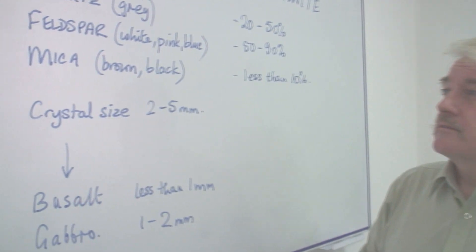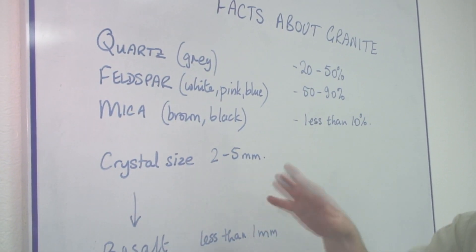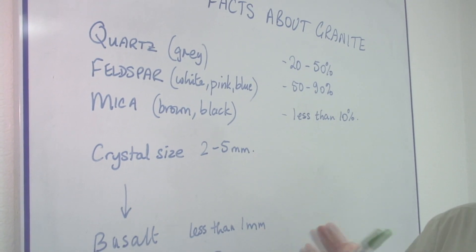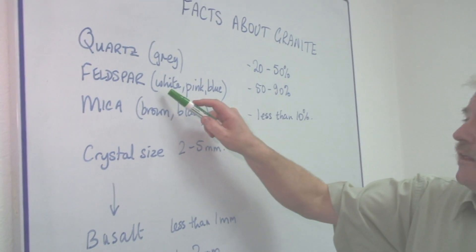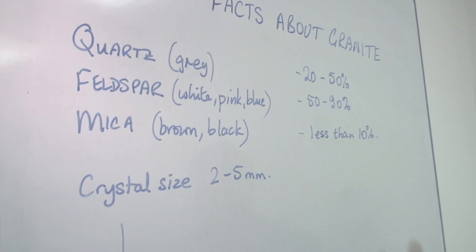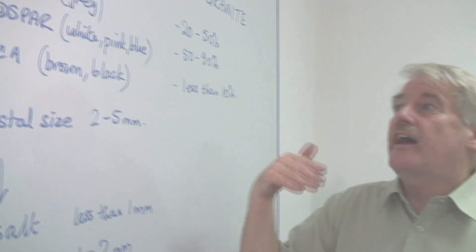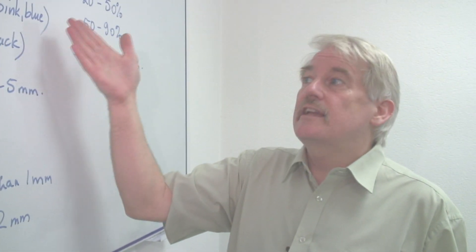Feldspar is of two types, which is alkaline feldspar and non-alkaline. The alkaline can be white or pink or blue. So the feldspar tend to be different colors. And that's what gives granite its color.